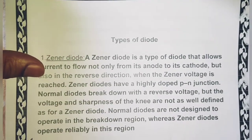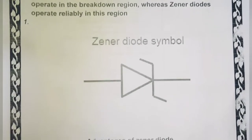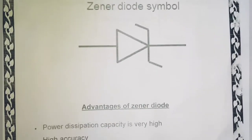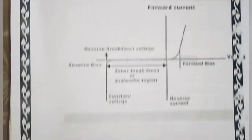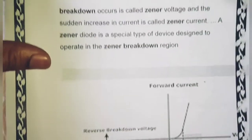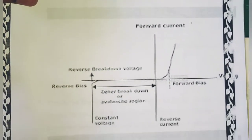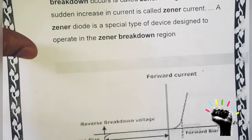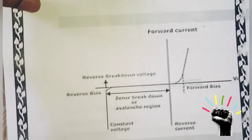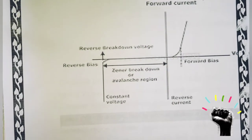Next हमारे पास types of diode है — Zener diode, Zener diode symbol। Types के बाद advantages of Zener diode आता है, और उसके बाद forward bias picture है — Zener breakdown का picture दिखाया गया है।